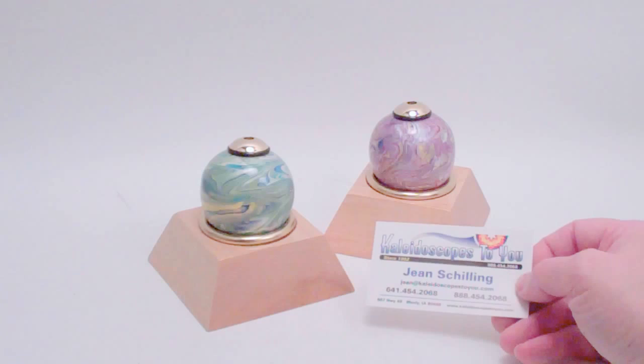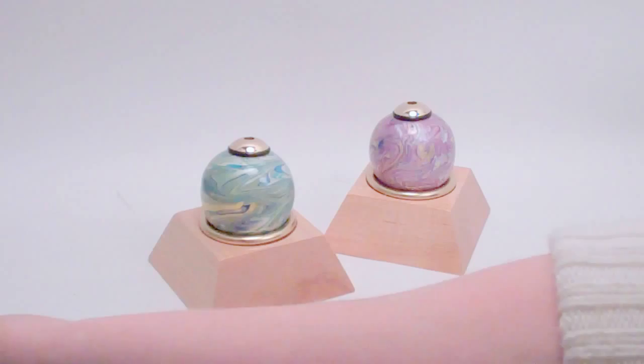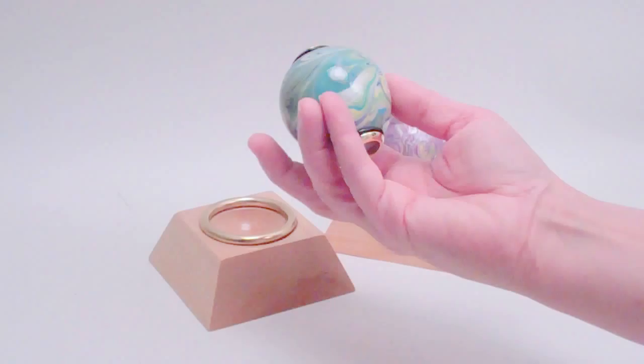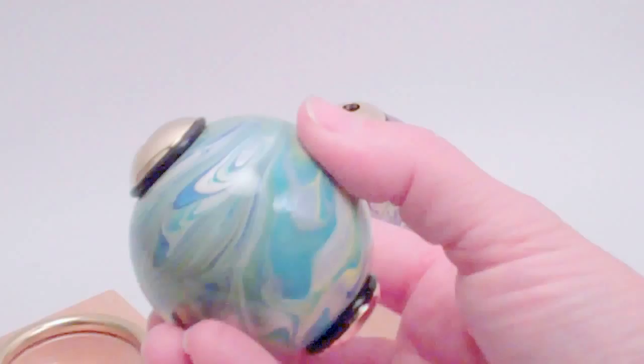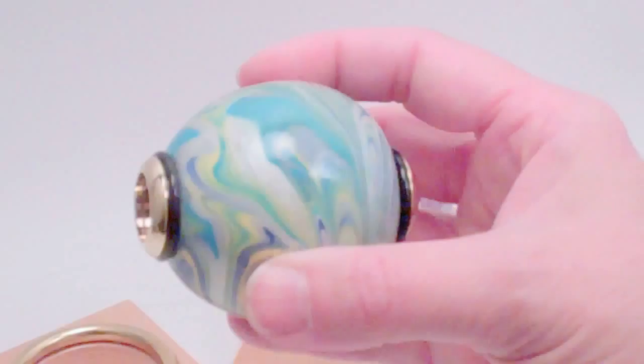Each one is completely unique, so if you're viewing this on YouTube, please check back to our main website to confirm more details. These kaleidoscopes are made from natural gourds and have many layers of paint swirled and applied onto the exterior. So the exterior on each one is marbled and swirled with these layers of paint.